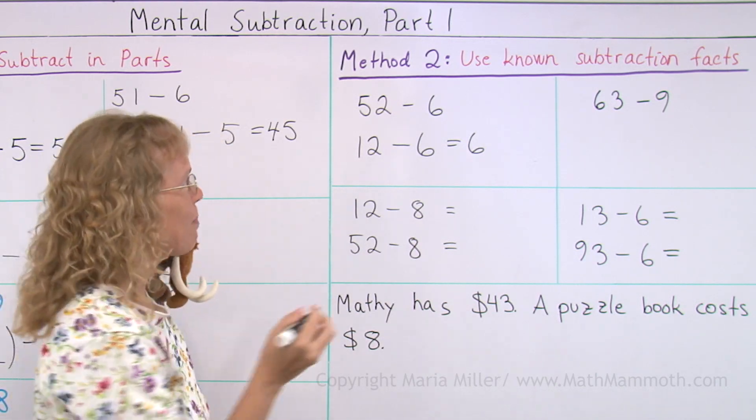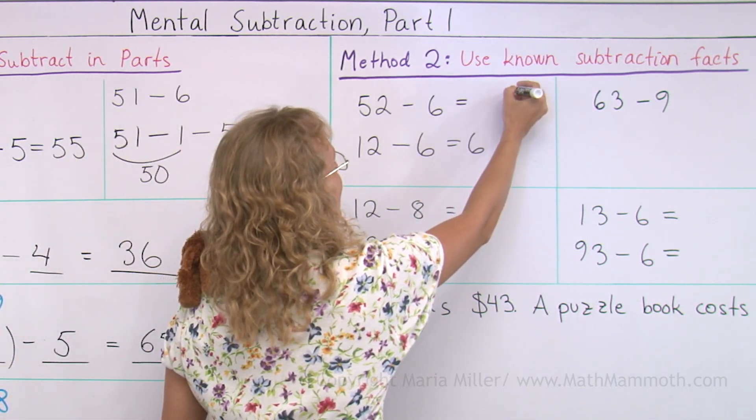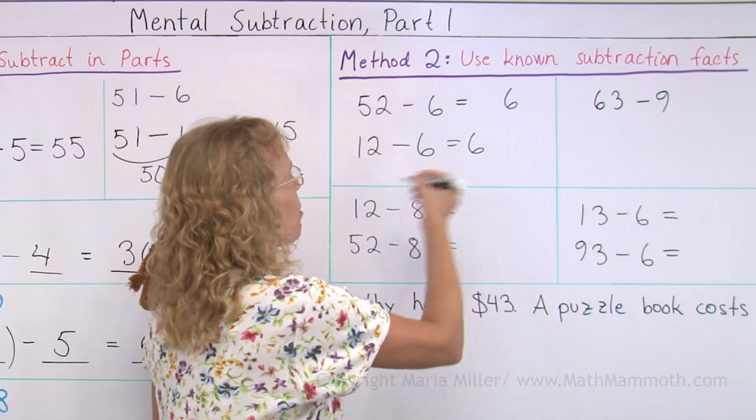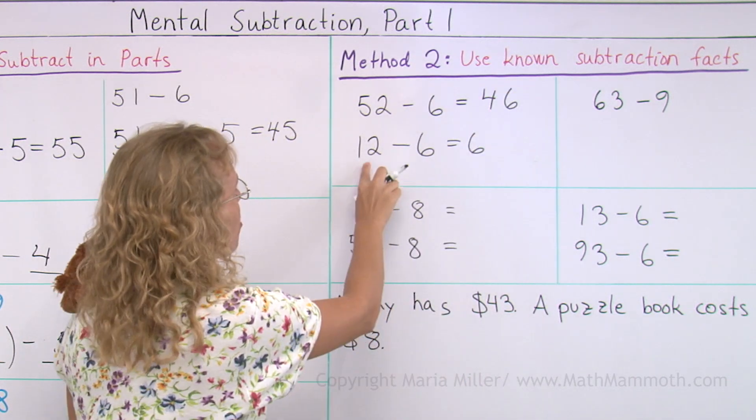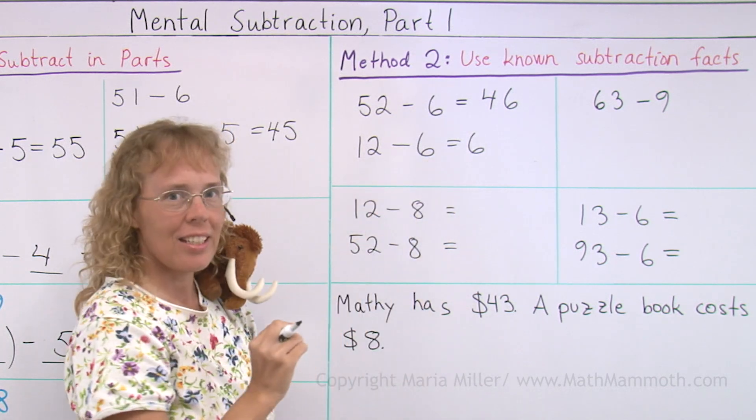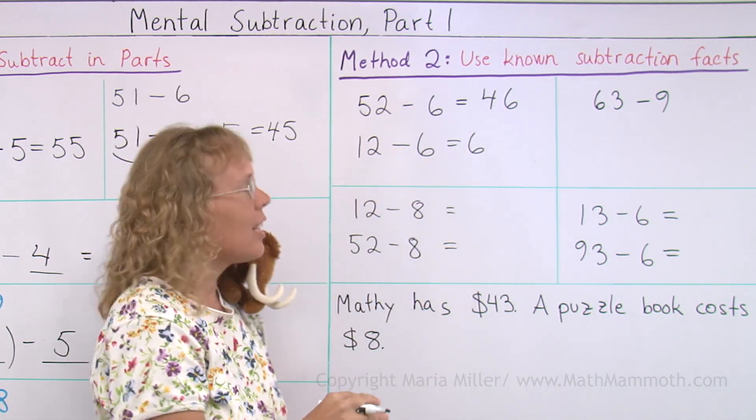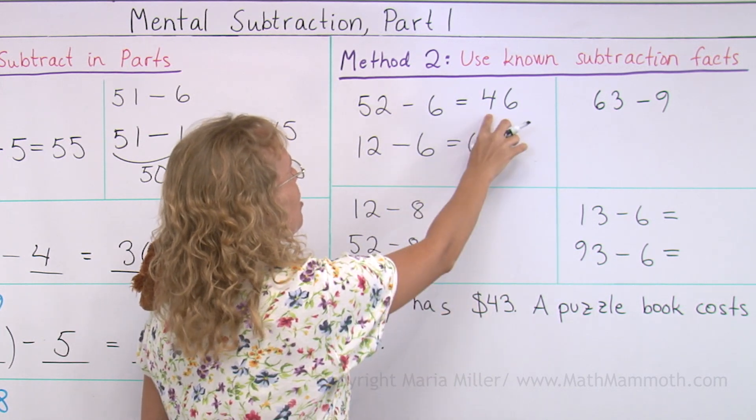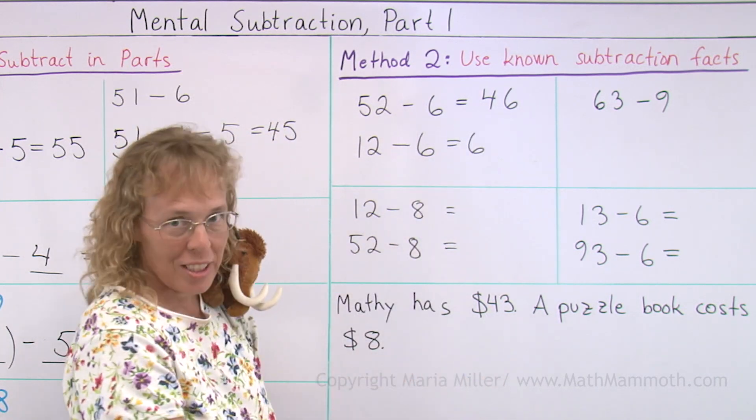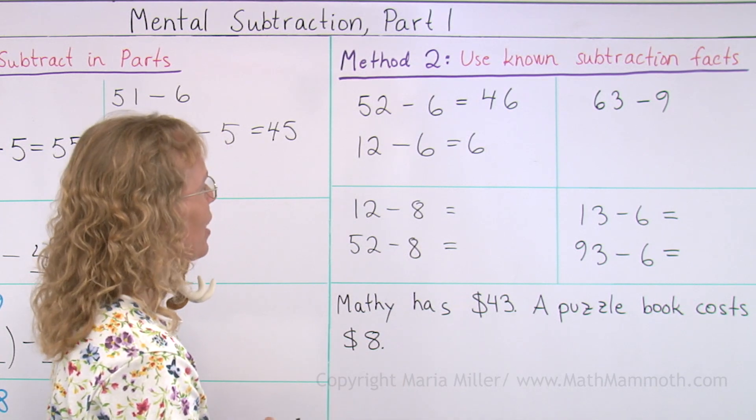So 52 minus 6 will end in 6. But it will be in the previous 10, in the 40s. It's like 12 minus 6. It goes down to the previous 10, which is actually no 10s.